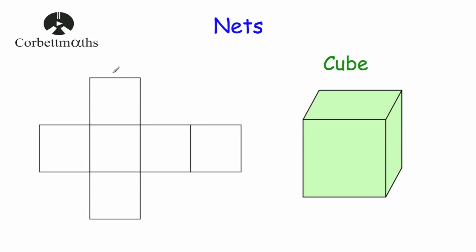Hi, welcome to this CorkMiles video. In this video we're going to look at nets — what a net is, some nets of some 3D shapes, and then some typical questions involving nets. So first of all, what is a net? A net is a collection of two-dimensional shapes that whenever you fold it will form the faces of a three-dimensional shape.